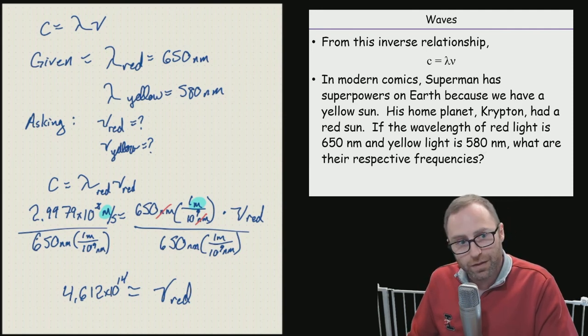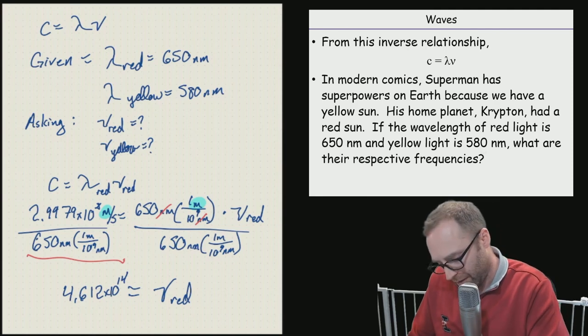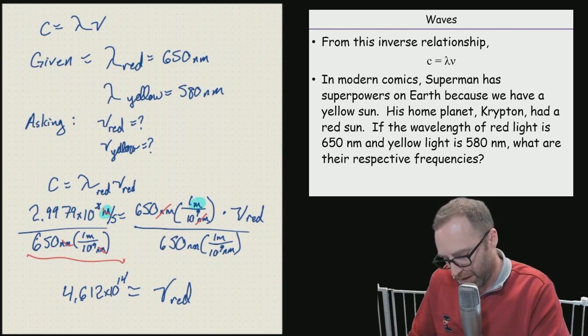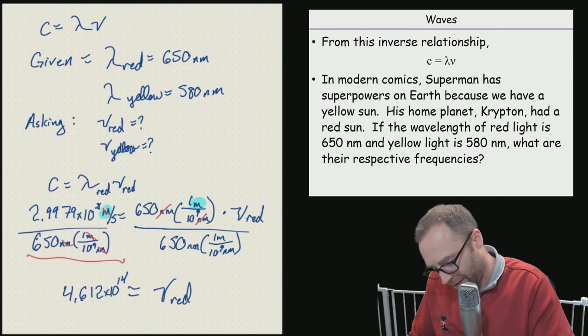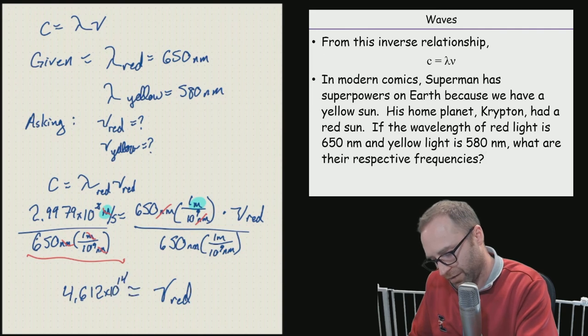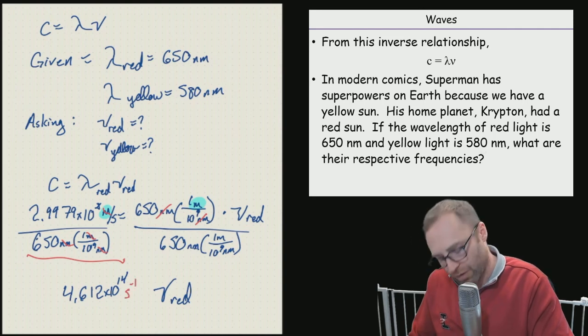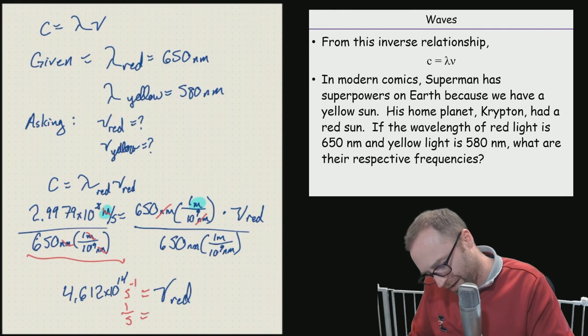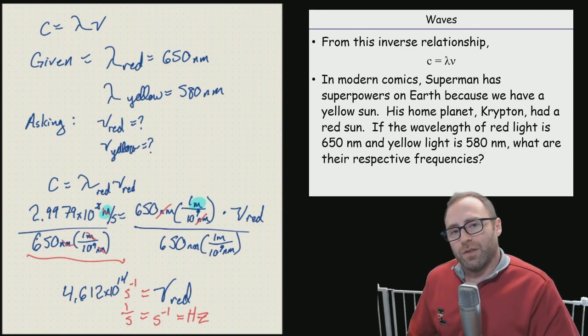My question to you is what are going to be the units here? If you take a look, by writing out the equation, the nanometers canceled. Meters is in the numerator of our numerator, so it's in the numerator. Meters down here is in the numerator of our denominator, so it's in the denominator. So that cancels. What we're going to be left with is just simply per seconds, or another way of writing it would be one over seconds. One over seconds is the same thing as saying seconds raised to the negative one, which is the same thing as writing out hertz. Because per second is the definition of hertz.